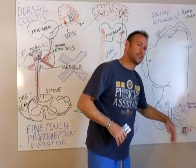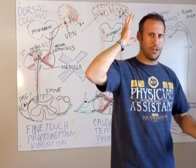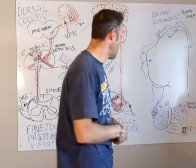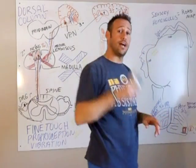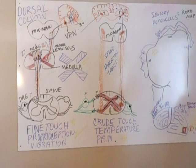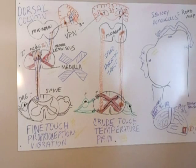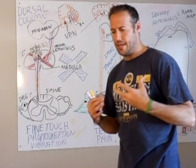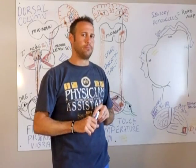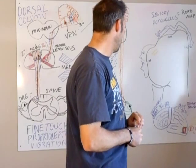One last thing: Brodmann's area 17 is for the visual cortex. This is the first area in which visual data is perceived, and it receives input from the lateral geniculate nucleus in the thalamus. The visual cortex is very good at pattern recognition and detecting static and moving objects.